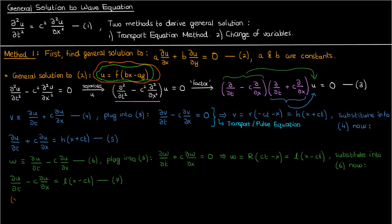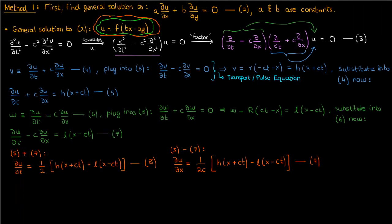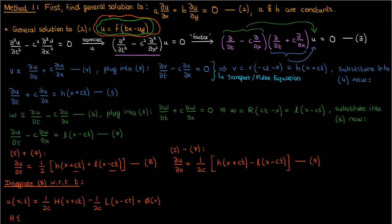Using the definition of w, we set up another differential equation for u — equation 7. Now let's add and subtract equations 5 and 7. When we add them, we get: du/dt equals one-half of h of x plus ct plus l of x minus ct. When we subtract them, we get: du/dx equals 1 over 2c times h of x plus ct minus l of x minus ct. These are simple differential equations we can solve by integrating. Starting with equation 8 and integrating with respect to t, we divide out the c and negative c appearing in h and l respectively.